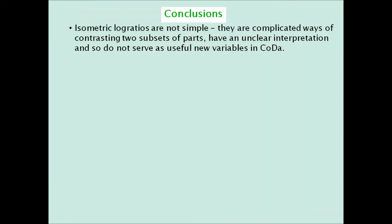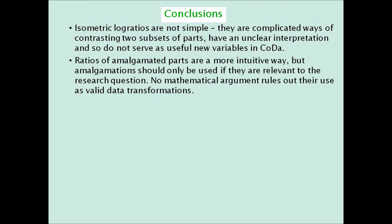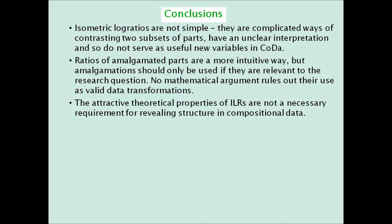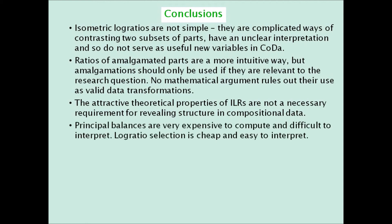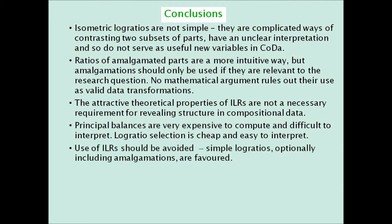In conclusion: isometric log ratios are not simple. They are complicated ways of contrasting two subsets of parts, have an unclear interpretation, and so do not serve as useful new variables in CODA. Ratios of amalgamated parts are a more intuitive way, but amalgamation should only be used if it is relevant to the research question. No mathematical argument rules out their use as valid data transformations. The attractive theoretical properties of ILRs are not a necessary requirement for good CODA practice in revealing structure in compositional data. Principal balances are very expensive to compute and difficult to interpret. Log ratio selection is cheap and easy to interpret. Use of isometric log ratios should be avoided. Rather, simple log ratios are favoured, including those that involve amalgamations.